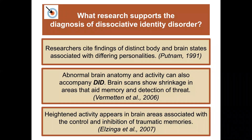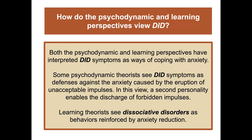What about research on dissociative identity disorder? Researchers cite findings of distinct body and brain states associated with differing personalities. Abnormal brain anatomy and activity can accompany DID — brain scans show shrinkage in areas that aid memory and detection of threats, and heightened activity in areas associated with control and inhibition of traumatic memories. Both psychodynamic and learning perspectives interpret these symptoms as a way of coping with anxiety, where a second personality enables discharge of forbidden impulses or behaviors reinforced by anxiety reduction.